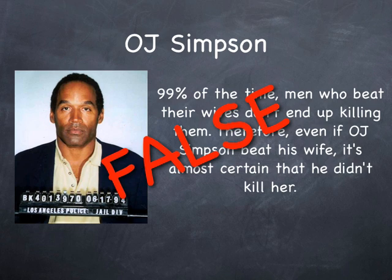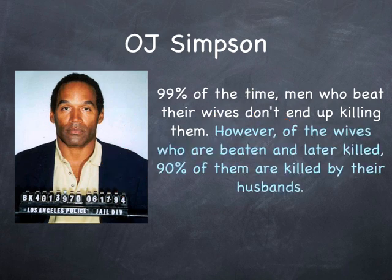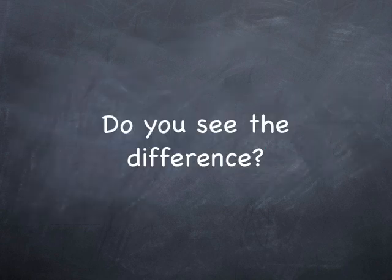Here is a slightly less misleading statement. 99% of the time, men who beat their wives don't end up killing them. However, of the wives who are beaten and later killed, 90% of them are killed by their husbands. Do you see the difference? Of course, most people don't kill their wives. But in the small percent of cases where the wife is killed, it's almost always the husband who did it.